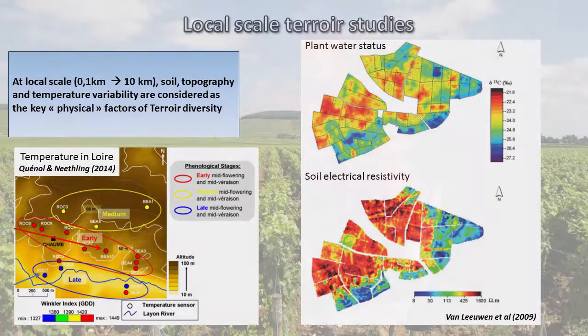Many studies have considered the key physical factors to be soil topography and temperature variability. There are many studies talking about it, but only few are known to address the importance of rainfall variability.